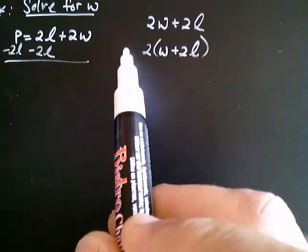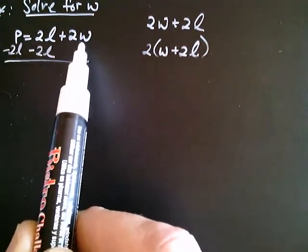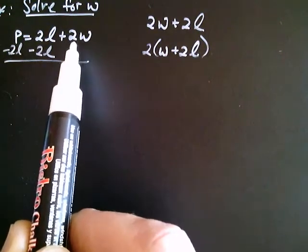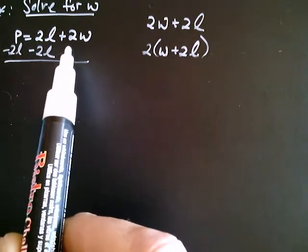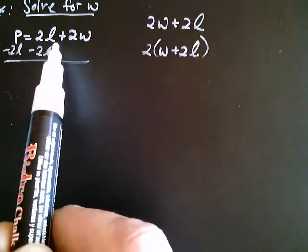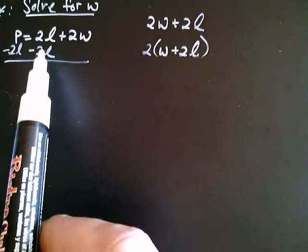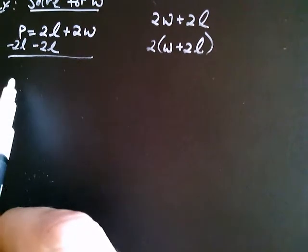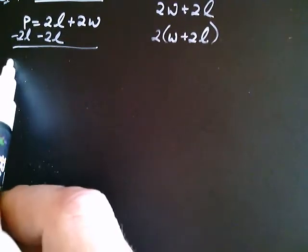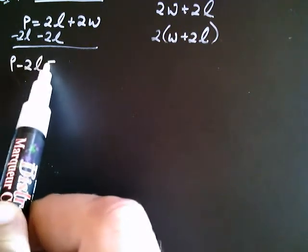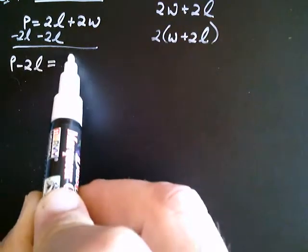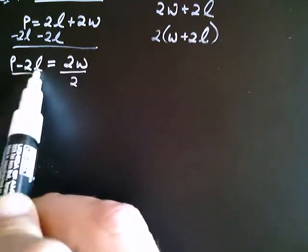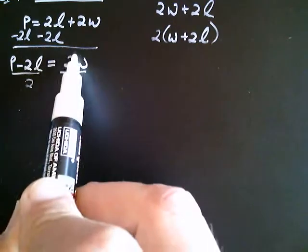So remember, we're trying to get the W by itself and the way we do that is by reversing, that is doing the inverse operations in reverse order. So by saying reverse order, if the last thing that was done was adding 2L, that means the first thing we have to do is subtract 2L. And the left hand side now, I've got, let's see, it's going to be P minus 2L and the right hand side I have 2W. And now finally I need to divide both sides by 2, and so I get my W by itself.